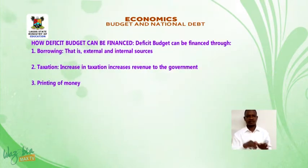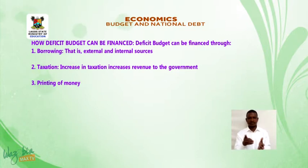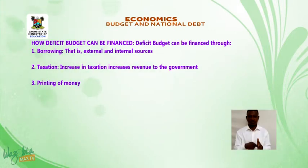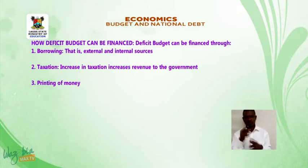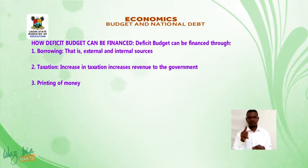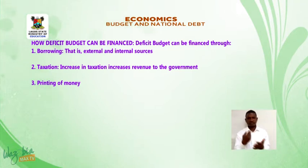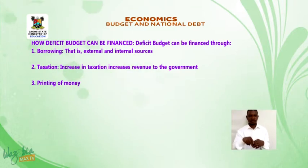How deficit budgets can be financed: Deficit budgets can be financed through — one, borrowing, that is from external and internal sources; two, taxation — an increase in taxation increases revenue to the government; and lastly, printing of money.